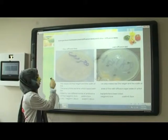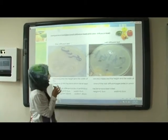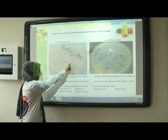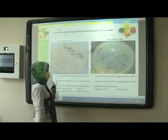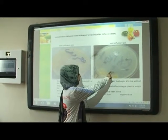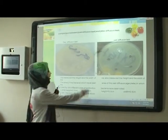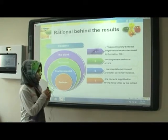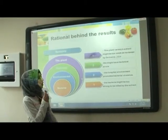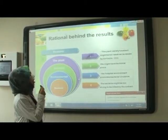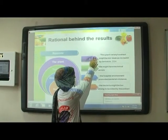We compared between normal antibiotics and our extractions as antibiotics. The result is that the standard antibiotic distance is 1.18 cm, and our extraction is 0.5 cm. So our extractions are less effective as antibiotics, because the bacteria might be too strong, or the hospital environment removes bacterial virulence, or we might have technical errors, or the plant variety extracts might be too weak, as reviewed in 2004.